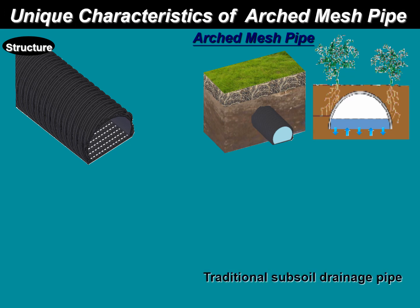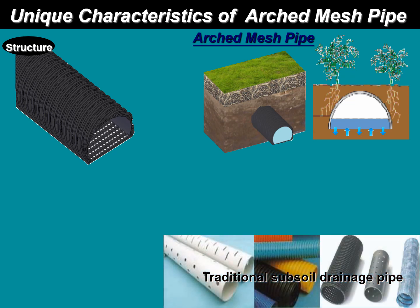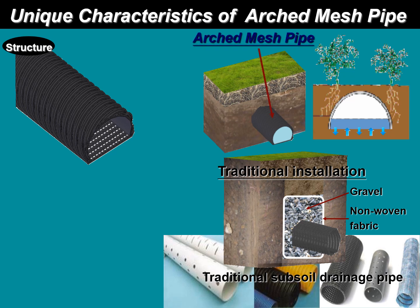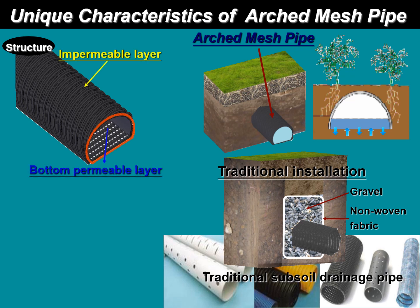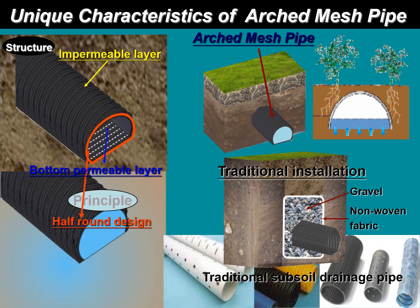The Water Chamber Manufacturing Principles: Traditional subsoil pipes require dug holes around the pipe, and must come along with gravel and other non-woven filter material coated to prevent pipe blockage. The Water Chamber uses a half-moon-shaped design. The half-moon part is an impermeable layer, and the flat part is a permeable layer. When constructing, the flat part of the mesh lies down, causing soil particles to sink due to gravity and not enter the aqueduct with the water. Therefore, the water chamber can solve the problem of underground drainage pipe blocking without filter material, and is clog-resistant.